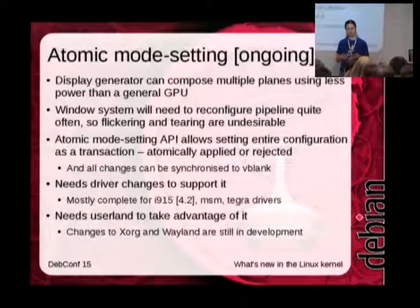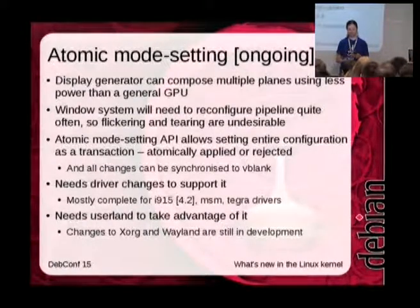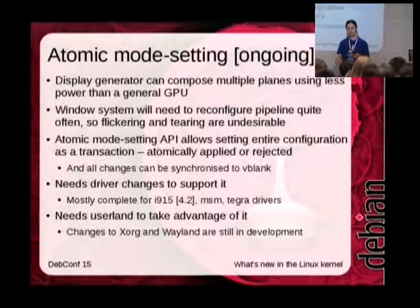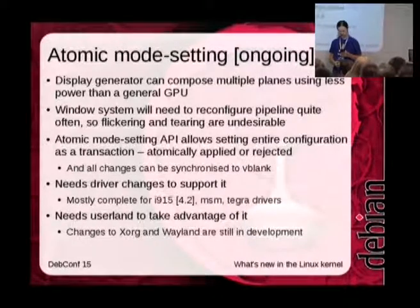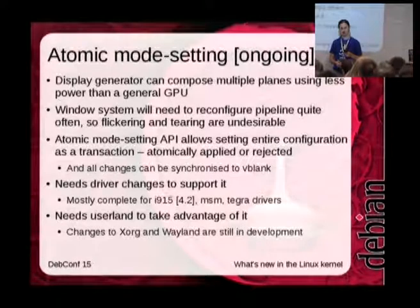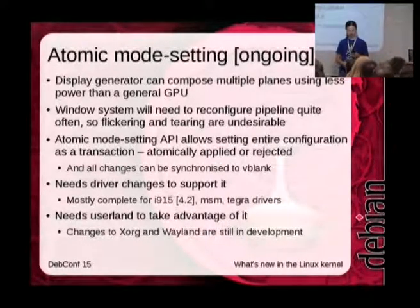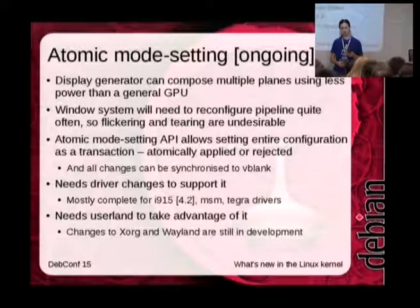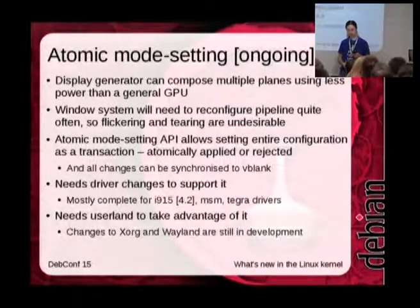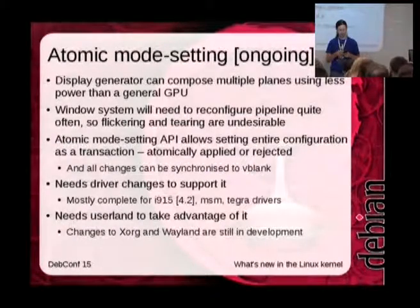The atomic mode setting API makes reconfiguration transactional — either all the changes are applied, or the driver detects it isn't going to work and rejects the request from user land. All those changes, if applied, can be carried out during a vertical blank period — between frames while the screen isn't actually being updated — so you have one frame with the old configuration and the next with the new. Graphics drivers need to be updated for this; the i915 driver for Intel hardware is supposed to be completely updated in Linux 4.2, and MSM and Tegra for ARM-based SoCs have been updated.